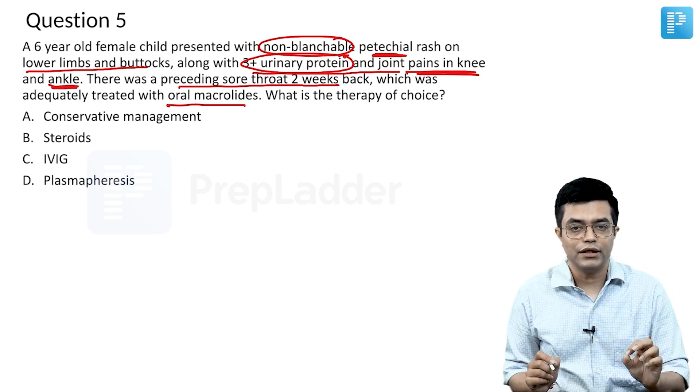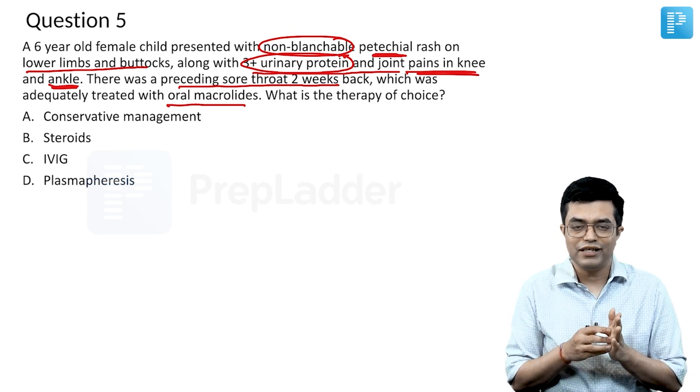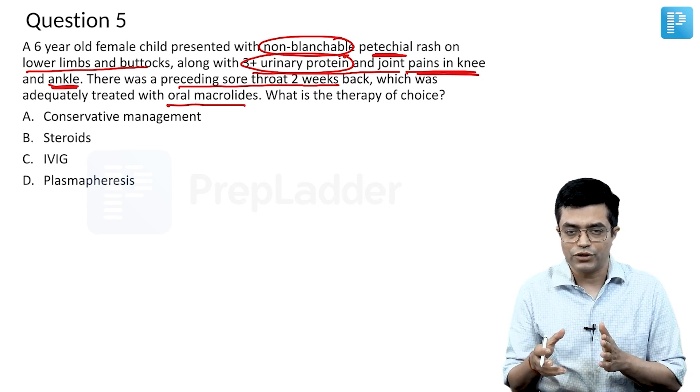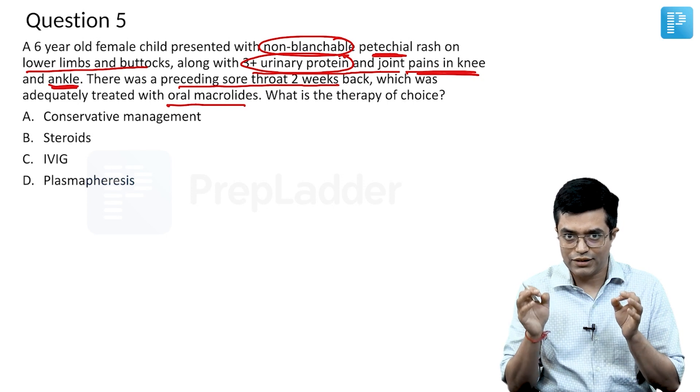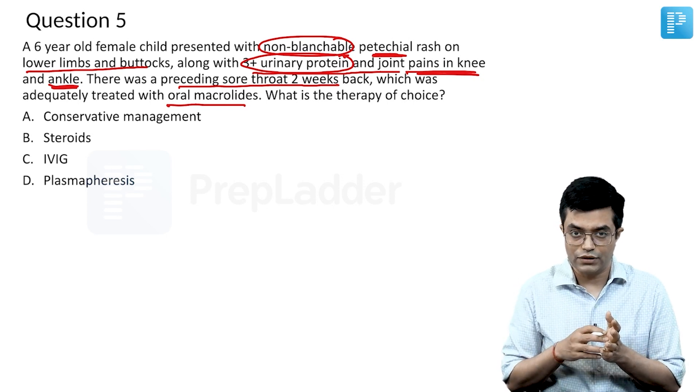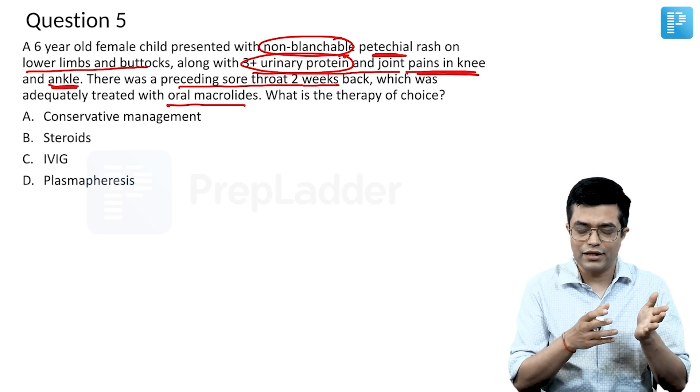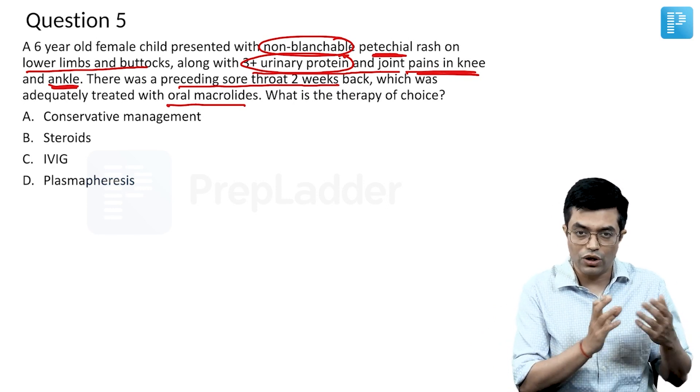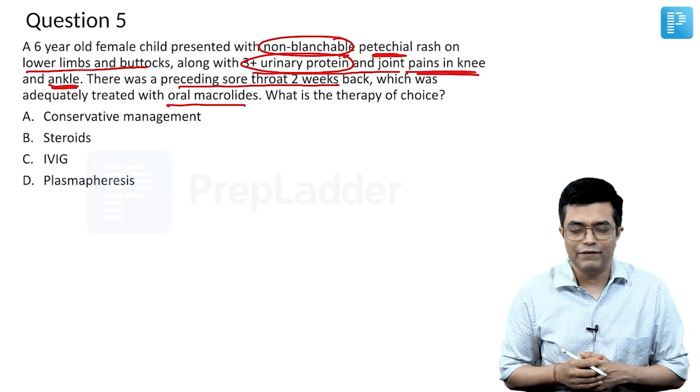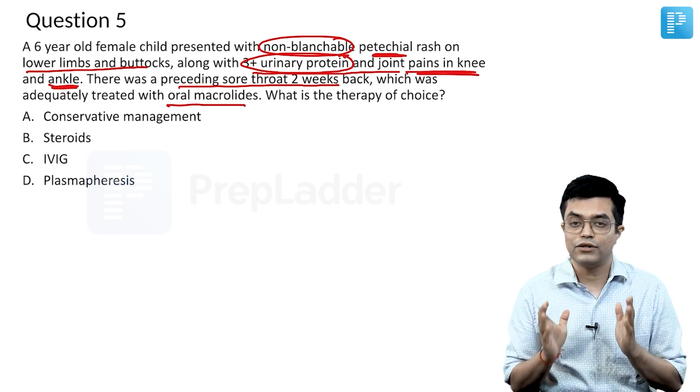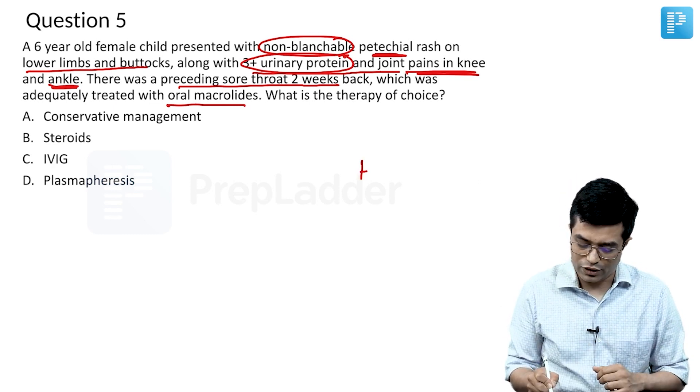According to EULAR criteria, presence of petechial rash without thrombocytopenia on the buttocks and lower limbs, along with features like renal involvement or arthritis, arthralgia, or GI involvement, or any tissue biopsy evidence of IgA, the diagnosis in this patient is Henoch-Schönlein Purpura.